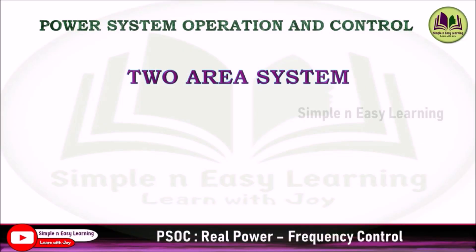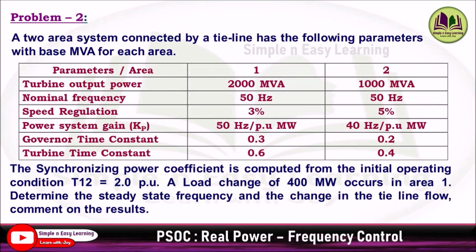Power system operation and control: two-area system solved problem 2. A two-area system connected by a tie line has the following parameters. Turbine output power: area 1 = 2000 MVA, area 2 = 1000 MVA. Nominal frequency is 50 Hz in both areas. Speed regulation is 3% in area 1 and 5% in area 2. Power system gain Kp is 50 Hz/pu-MW in area 1 and 40 Hz/pu-MW in area 2. Governor time constant Tg is 0.3 (area 1) and 0.2 (area 2). Turbine time constant Tt is 0.6 (area 1) and 0.4 (area 2). The synchronizing power coefficient T12 is computed from initial operating conditions as T12 = 2.0 per unit.